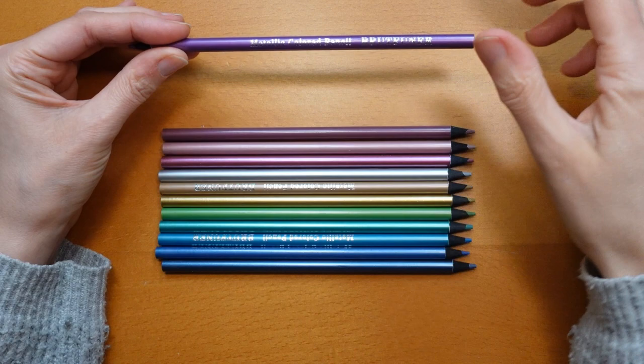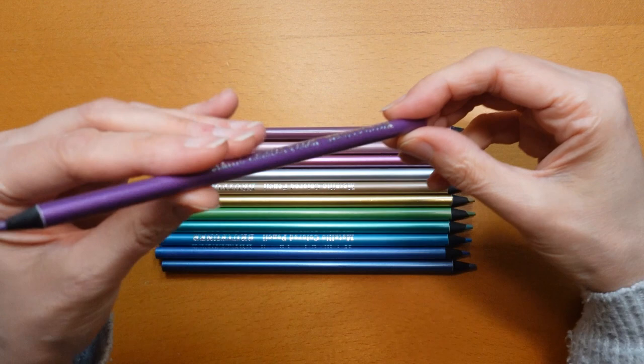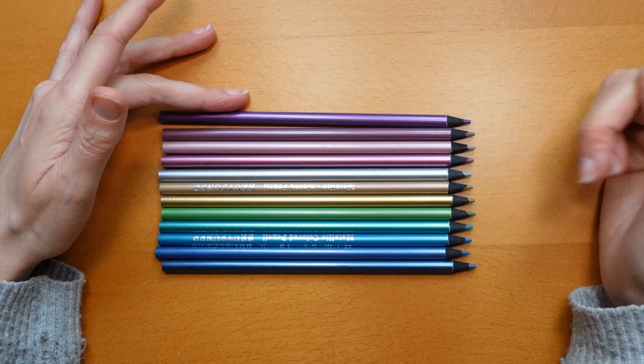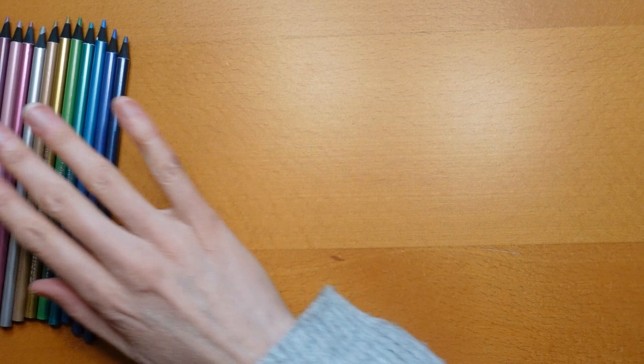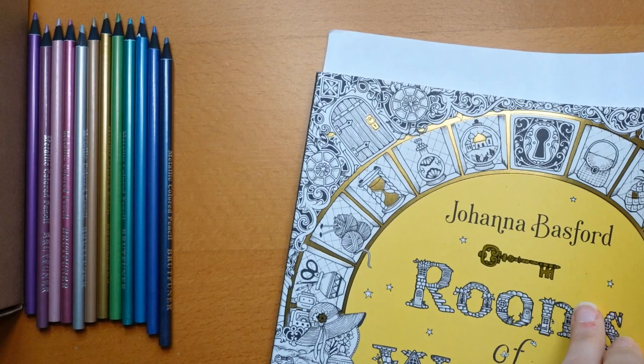Right. So it just says metallic color pencil Brutfuna on there and there's nothing else on there at all. Okay so we've got no color identification apart from the color of the actual barrel. No numbers, no names, anything like that. But we do tend to find that. I tend to find that with budget brands. They don't always have names and numbers which can be a bit annoying.